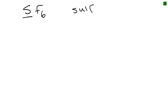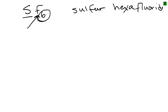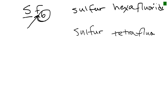Let's name a few examples. If we have SF6: S is sulfur, six is hexa, F is fluoride — so this is sulfur hexafluoride. If the compound is sulfur tetrafluoride, tetra is four, so that's SF4.